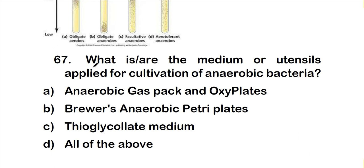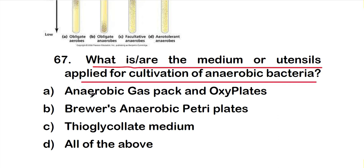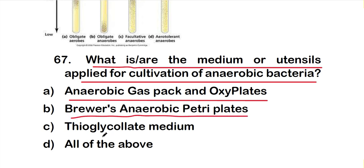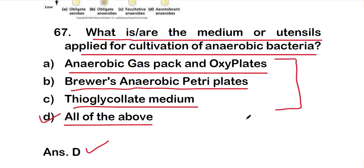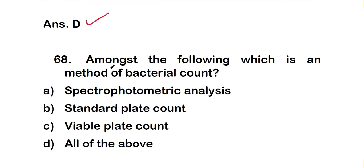Question number 67: What media or utensils are applied for cultivation of anaerobic bacteria? Options are: A) anaerobic gas pack and oxyplets, B) Brewer's anaerobic Petri plates, C) thioglycolate medium, D) all of the above. The right answer is option D — all of these media and utensils are used for cultivation of anaerobic bacteria.